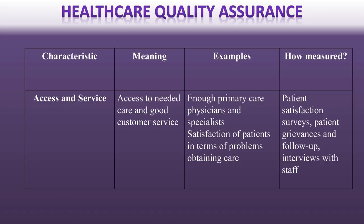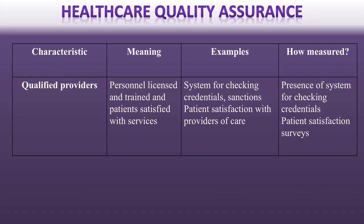When we try to measure healthcare quality in the United States, we look at a range of different things. Things like access — are services available, are they providing the things that people need, and are people satisfied with the provision of those healthcare services? This can be measured through surveys. We also want to make sure that healthcare systems have qualified providers — are they licensed appropriately, do healthcare institutions have appropriate measures for ensuring that people have the right credentials and that they're up to date, and are patients happy with the services they've been provided?